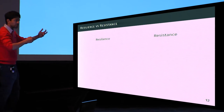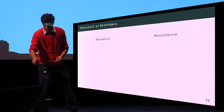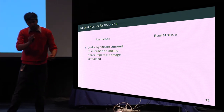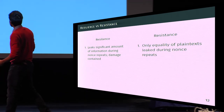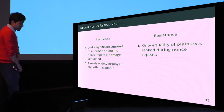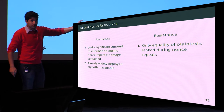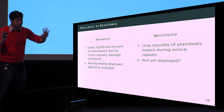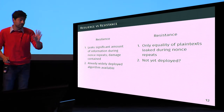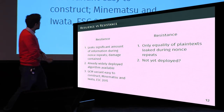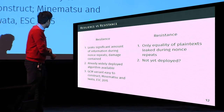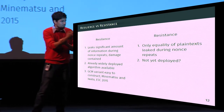This idea of adding an additional oracle comes from Barwell et al.'s Subtle AE, where they distinguish challenge oracles and honest oracles. Comparing nonce-misuse resilience to resistance: resilience still leaks significant information when a nonce is repeated — it only limits the damage. Nonce-misuse resistance is stronger, leaking only equality of plaintext during repeats. However, resilience has an advantage: a widely deployed algorithm already achieves it, and you can easily construct a GCM variant — see Minematsu and Iwata at FSE 2015.